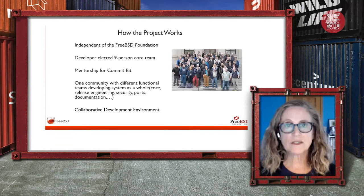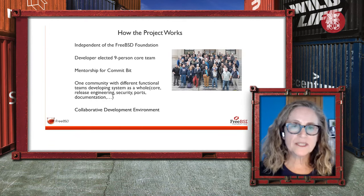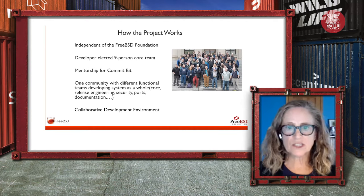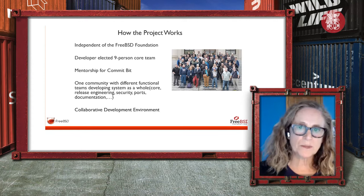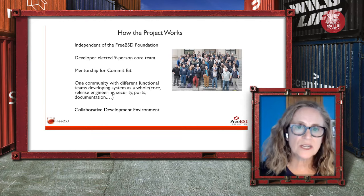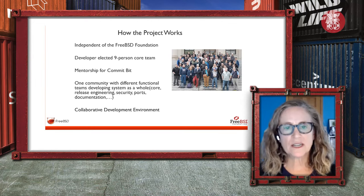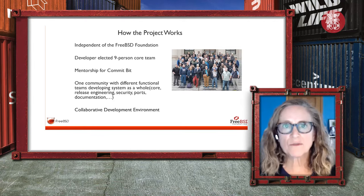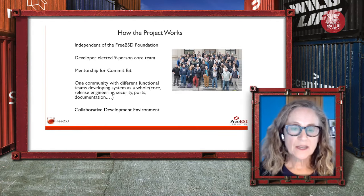How does the project work? It's independent of the FreeBSD Foundation — some people think the project is underneath the foundation, that we're an umbrella organization, but we're not; we're separate, even though the foundation's purpose is to support the project and community. It's led by a nine-person elected core team. We have a mentorship process when you get your commit bit, and the project is broken down into different functional teams to support different parts of the project, whether in development or infrastructure. It is a collaborative development environment.